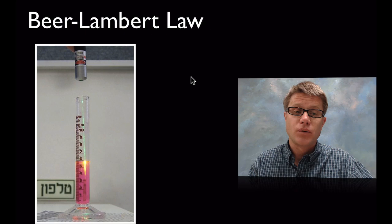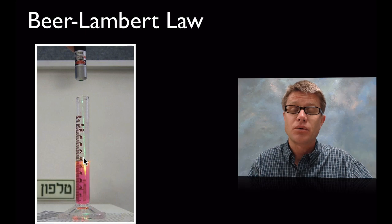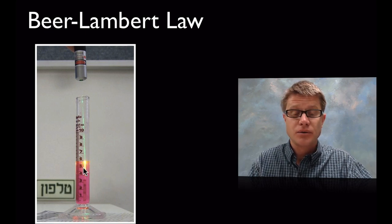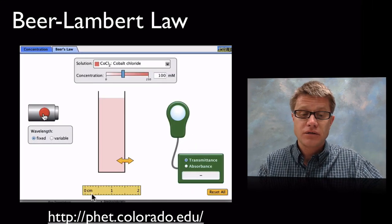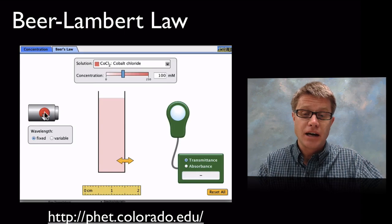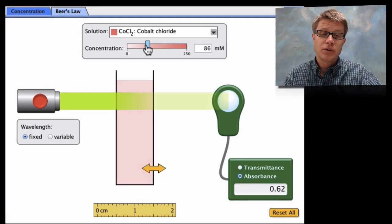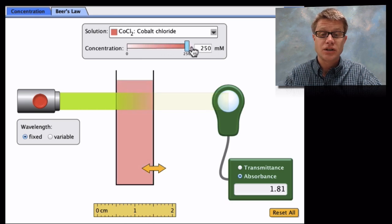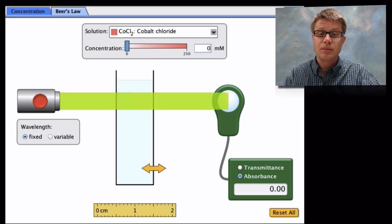Finally we have Beer-Lambert law. Here's an example - we have a dye and we're shining a green laser into it. That laser light isn't making it all the way through because we have molecules inside absorbing some of that light. Here's an application - a simulation from PhET. We have light on this side, and we measure the amount of light moving through it. I've turned the light on and set it to absorbance. We're dealing with cobalt chloride solution. As I turn down the concentration more light goes through, and as I increase the concentration less light makes its way through. This is Beer-Lambert law.